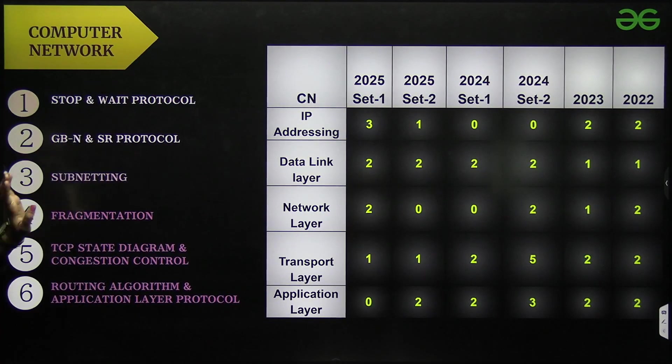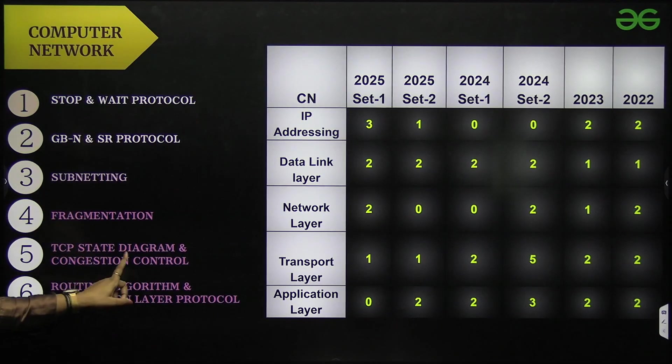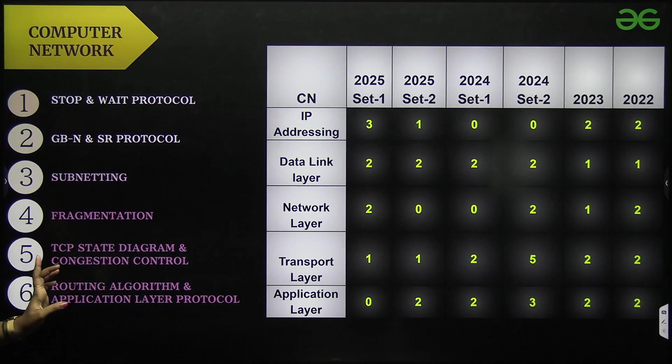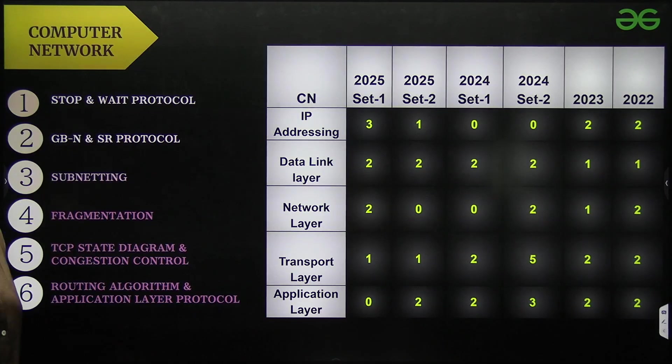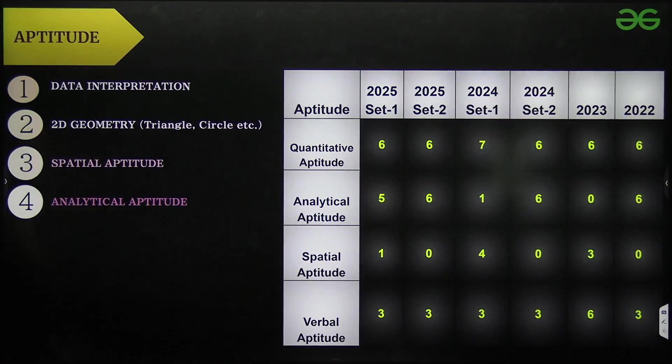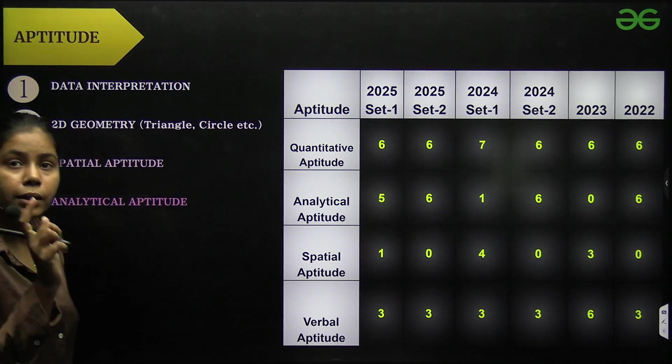And computer networks: stop and wait protocol, Go-Back-N and SR protocol, subnetting, fragmentation, TCP state diagram and congestion control, and then we have routing algorithm and application layer protocol. Next we have is aptitude.